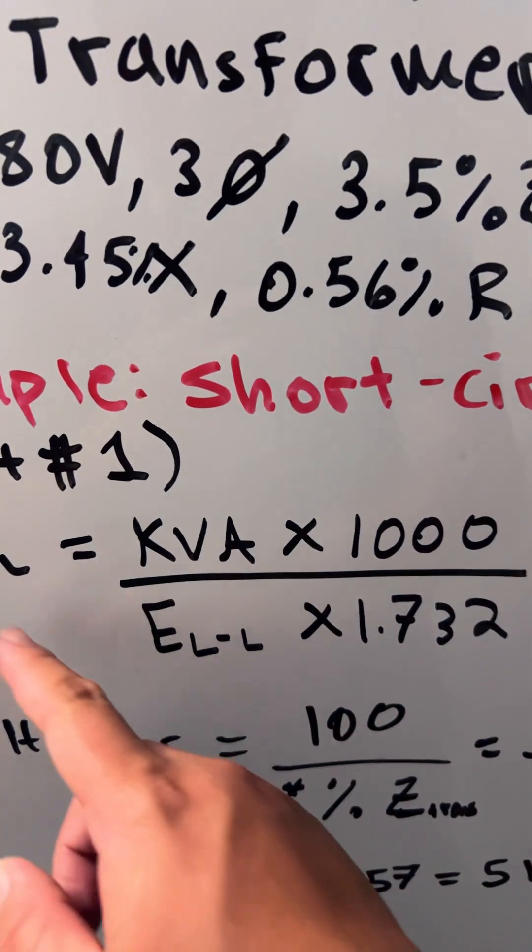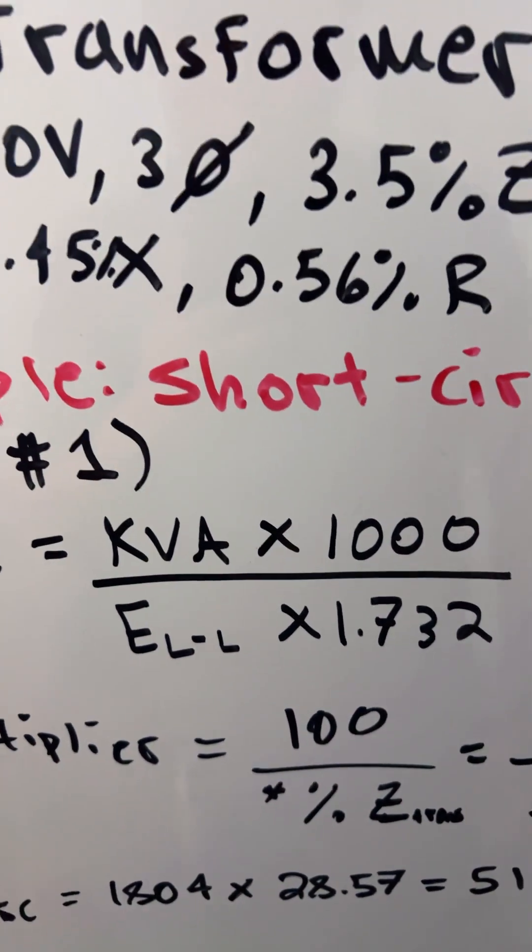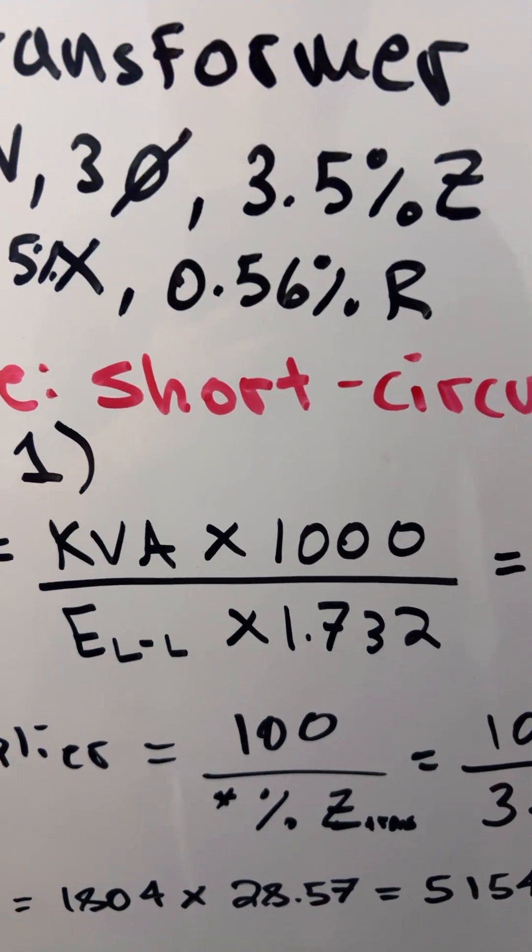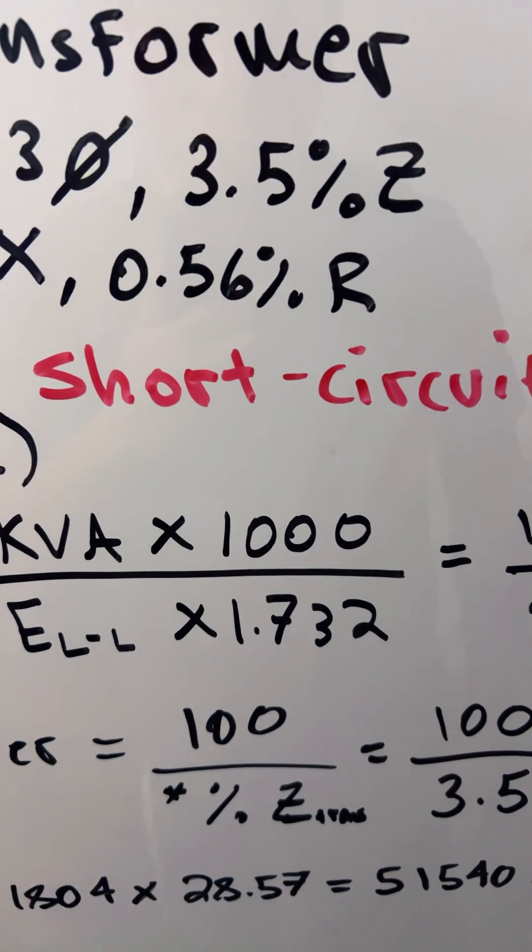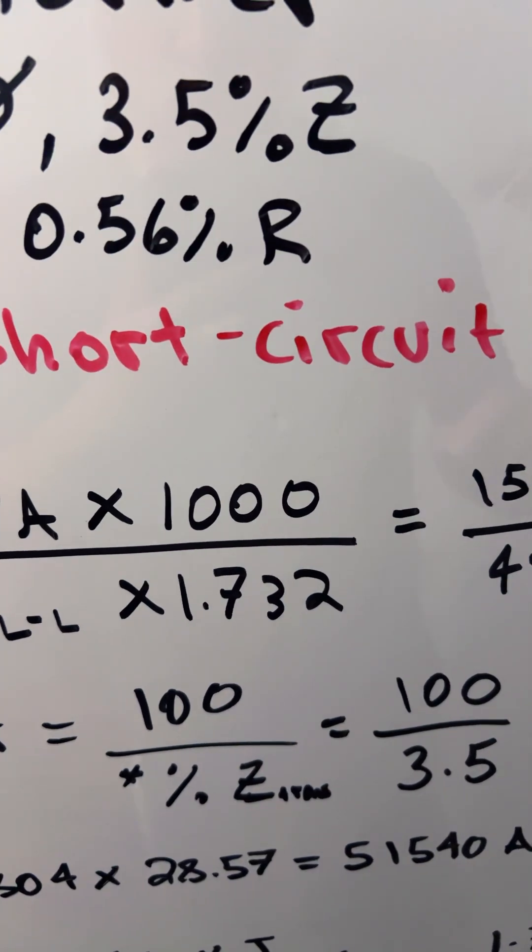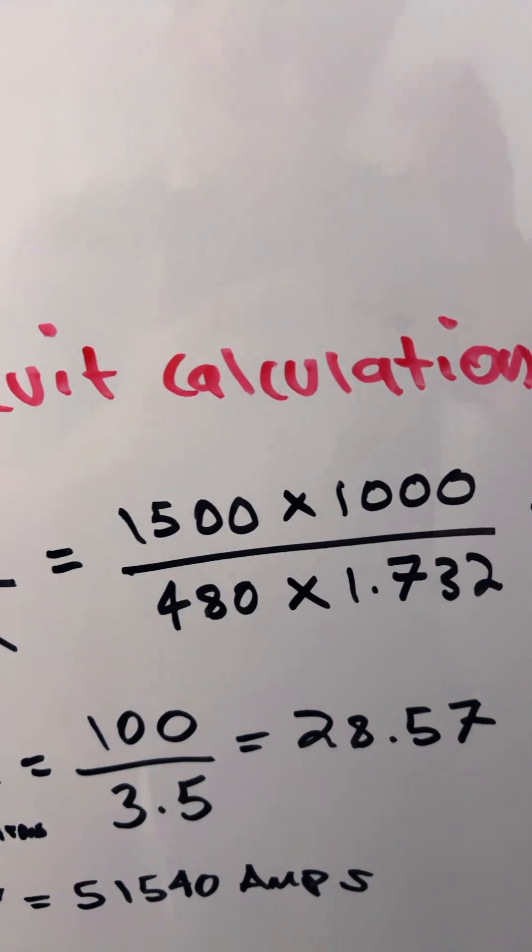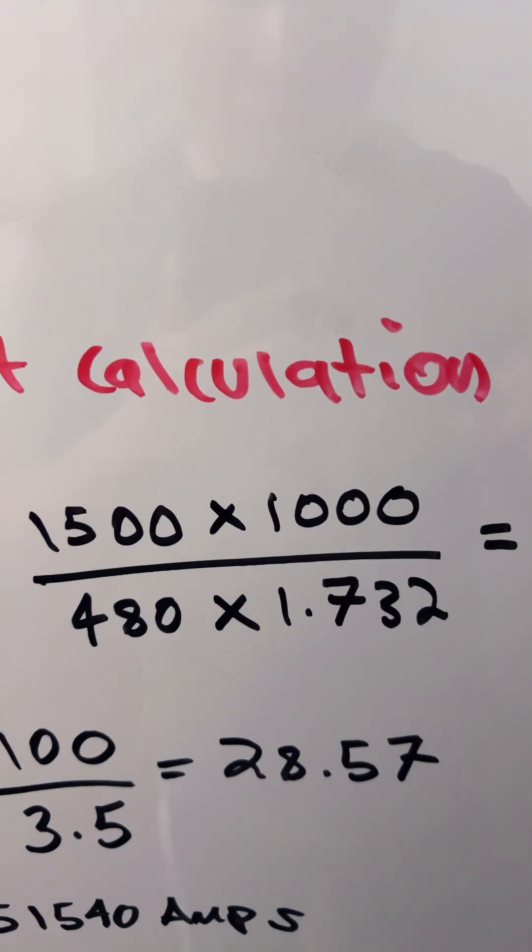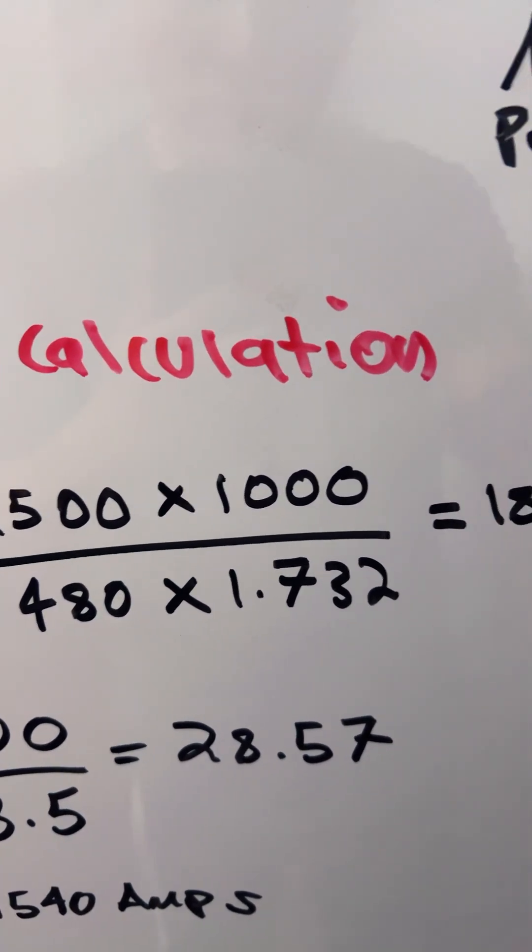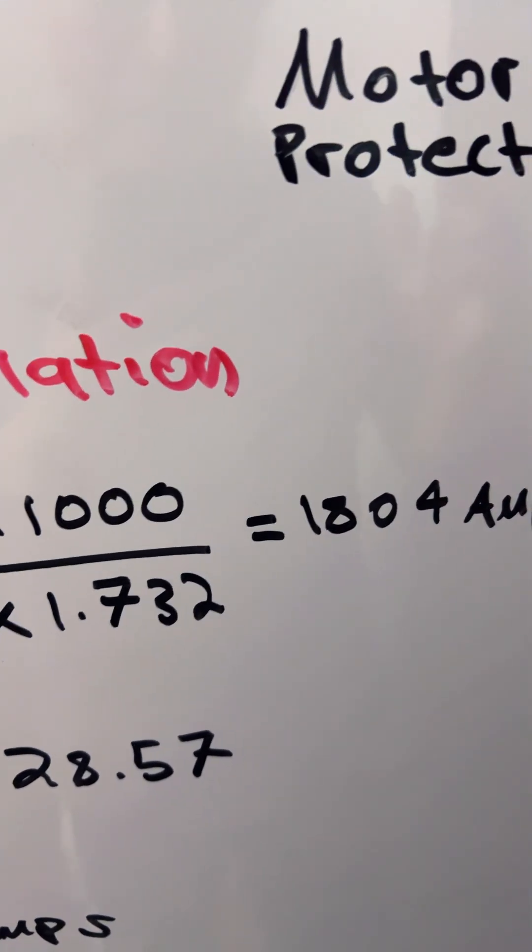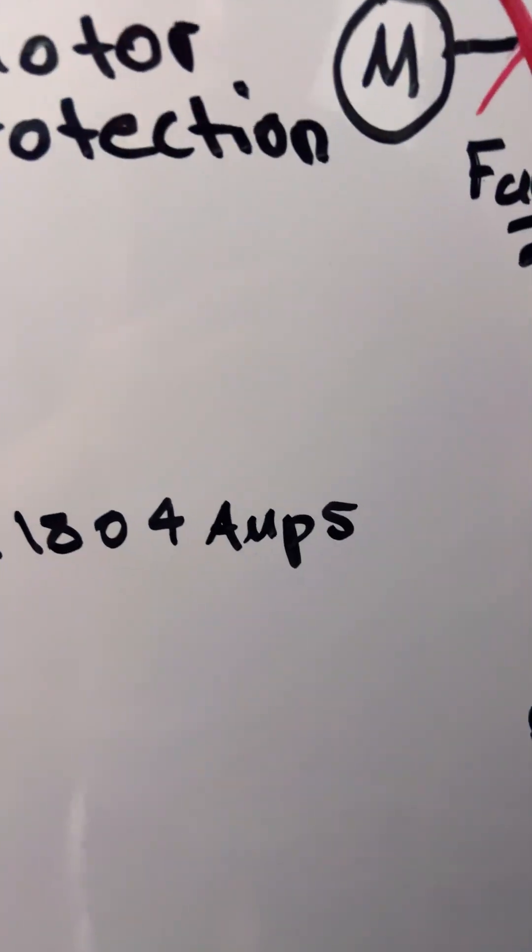Line-to-line amps equals kVA times 1000 divided by line-to-line voltage times 1.732, which is square root of 3. This equals 1500 times 1000 divided by 480 volts times square root of 3, which equals 1804 amps.